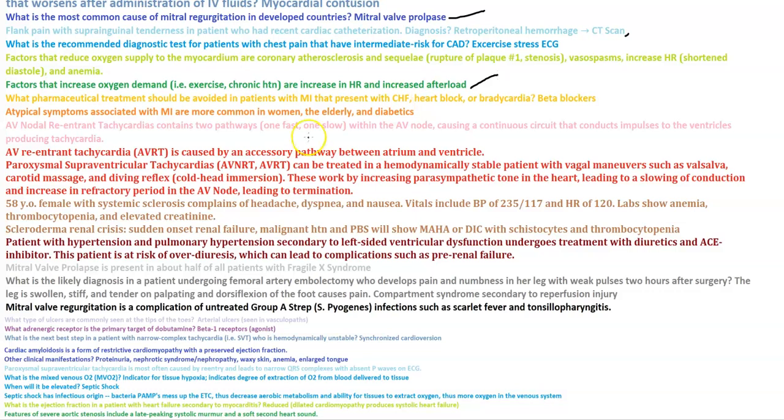A 58-year-old female with systemic sclerosis complaining of headache, dyspnea, and nausea. Vitals include BP of 235/117 and heart rate of 120. Labs show anemia, thrombocytopenia, and elevated creatinine. That would be sclerodermal renal crisis — sudden onset renal failure and malignant hypertension. Peripheral blood smear will show MAHA or DIC with schistocytes and thrombocytopenia.